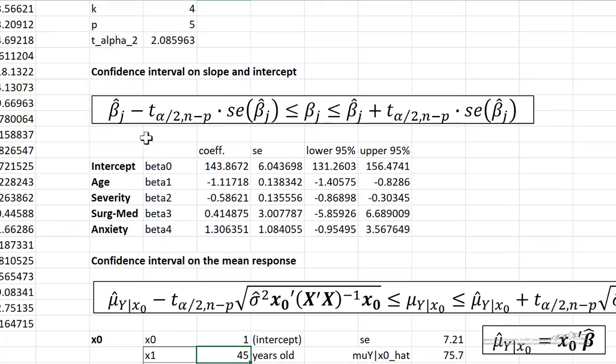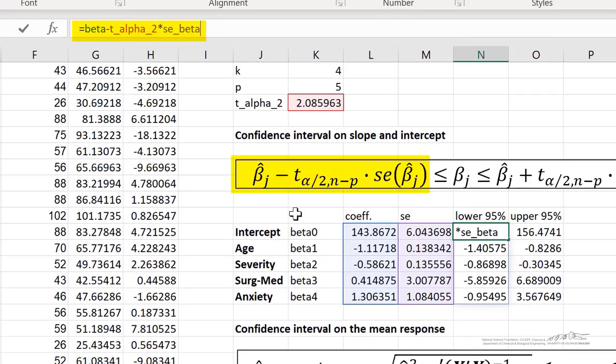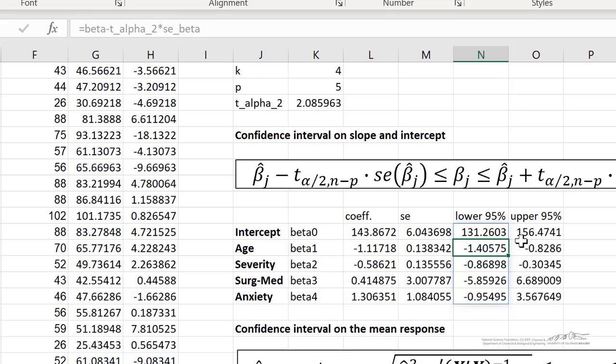So here we have our confidence interval on the slope and intercept. In some previous screencasts, I've showed you how you can calculate coefficients and standard error. We can compute our lower 95 and upper 95. It doesn't have to be 95. We can have a different value of alpha. But that's what I've done here using this formula. If I click in here, you see that we are using our coefficients. So that's our beta j hat. We're using our t alpha divided by 2 with n minus p degrees of freedom. And we're using our corresponding standard errors of those coefficients. So that's how we can compute the lower and upper confidence intervals on the parameters.